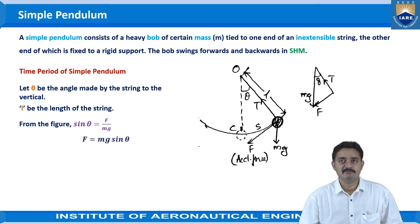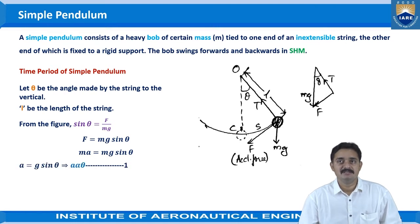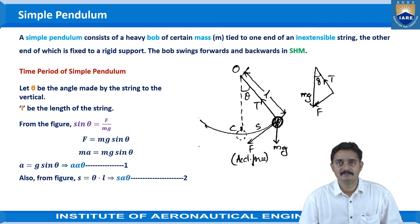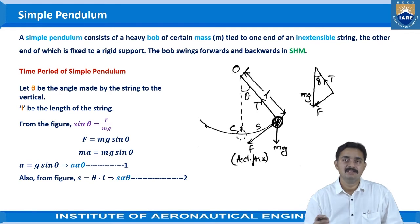From this we can write f is equal to mg sin theta and we know f is equal to ma that is equal to mg sin theta. From this we can write a is equal to g sin theta or we can say a is proportional to theta, take it as equation 1. And also from figure we can say that s is equal to theta into l, that means the length of the arc.